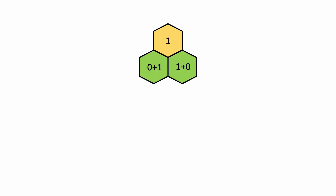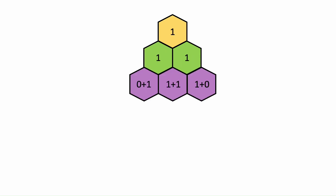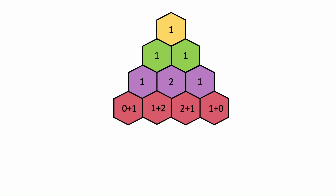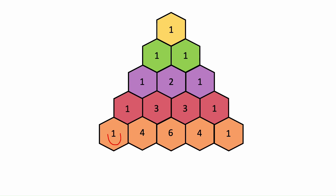For example, for the next row we add zero and one — because there's no number on the outside — giving us one plus zero, so we have one and one. The next row: zero plus one is one, one plus one is two, and one plus zero is one. Continuing: zero plus one is one, one plus two is three, two plus one is three, and one plus zero is one. The next row gives us one, four, six, four, one.